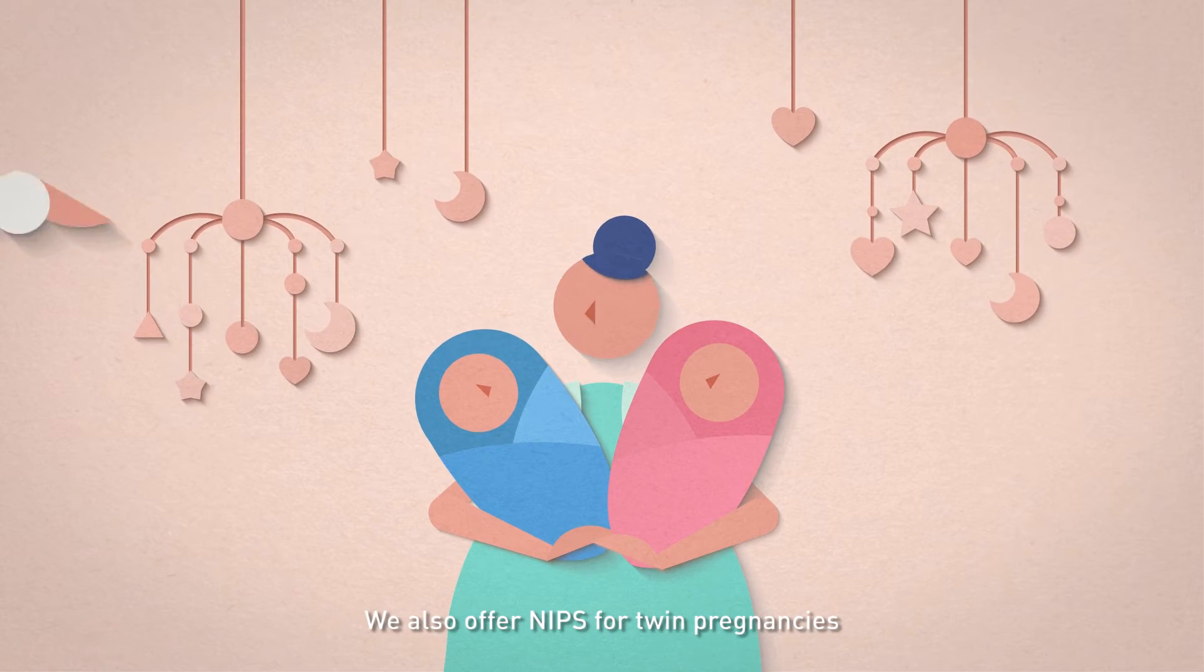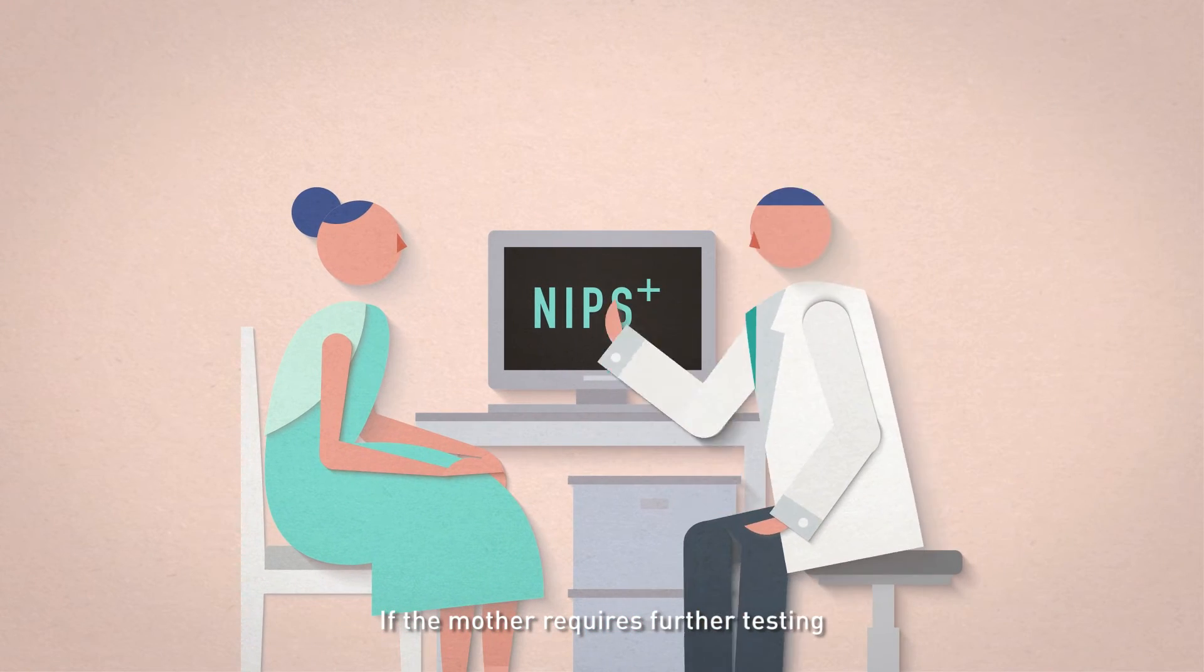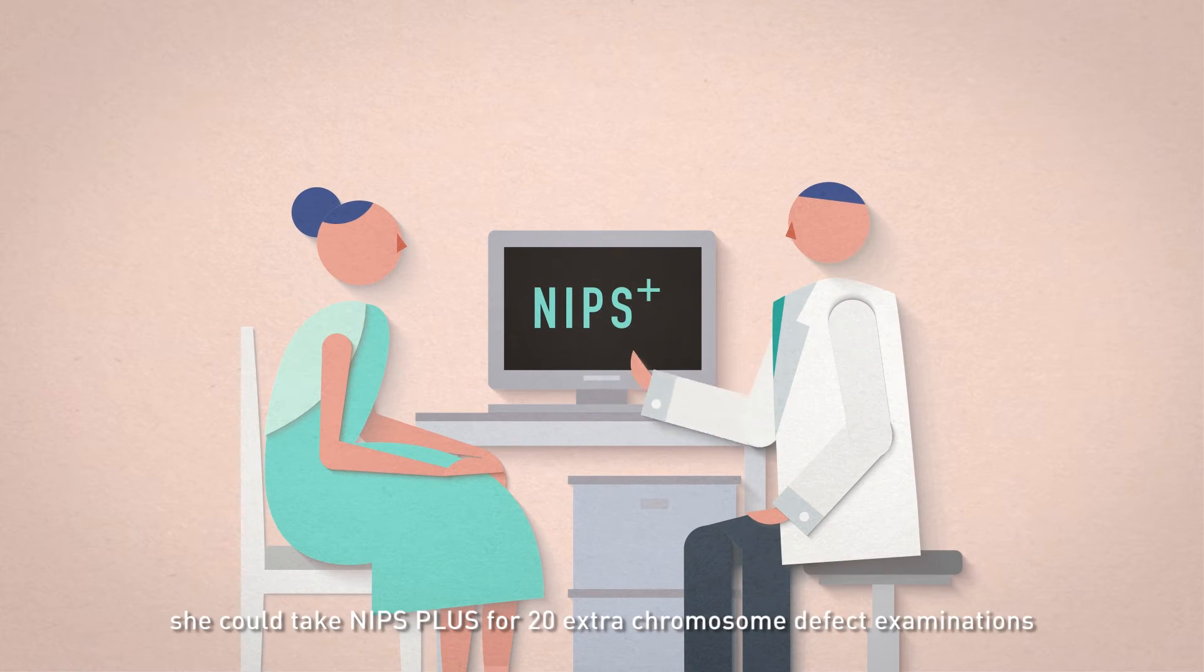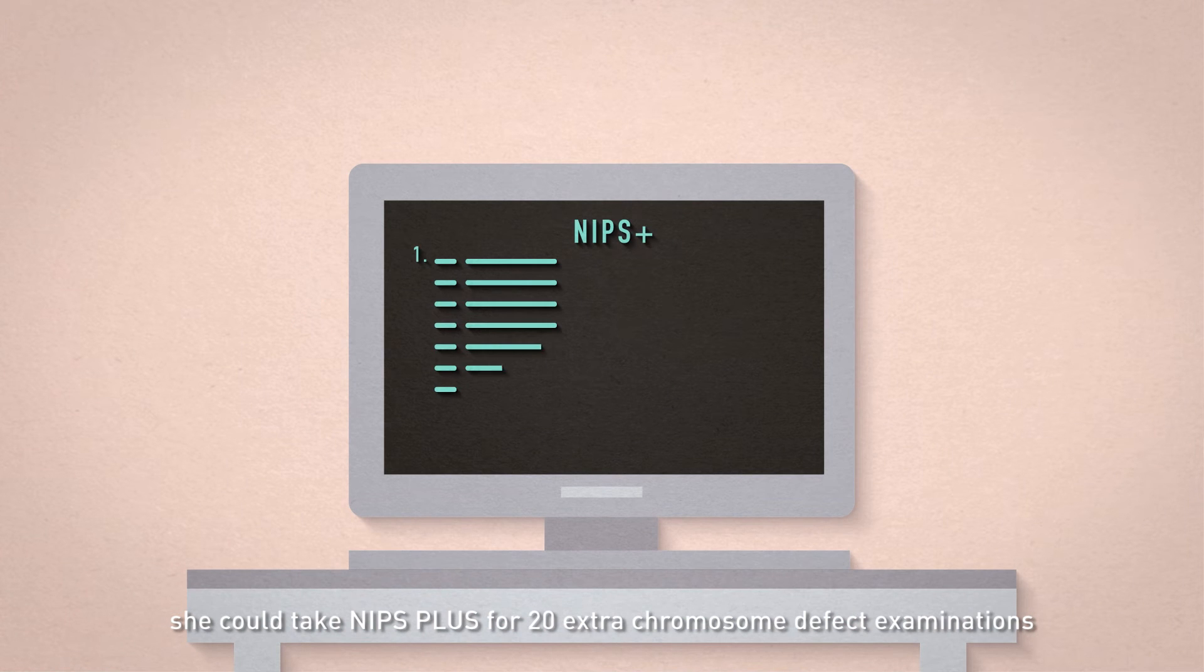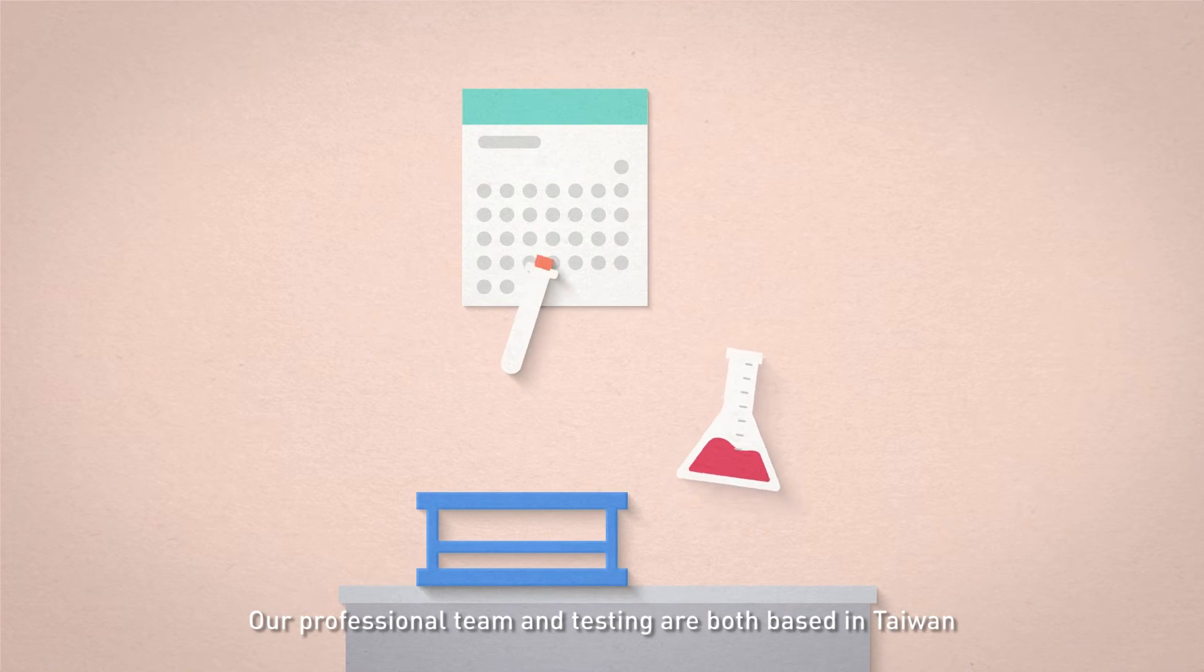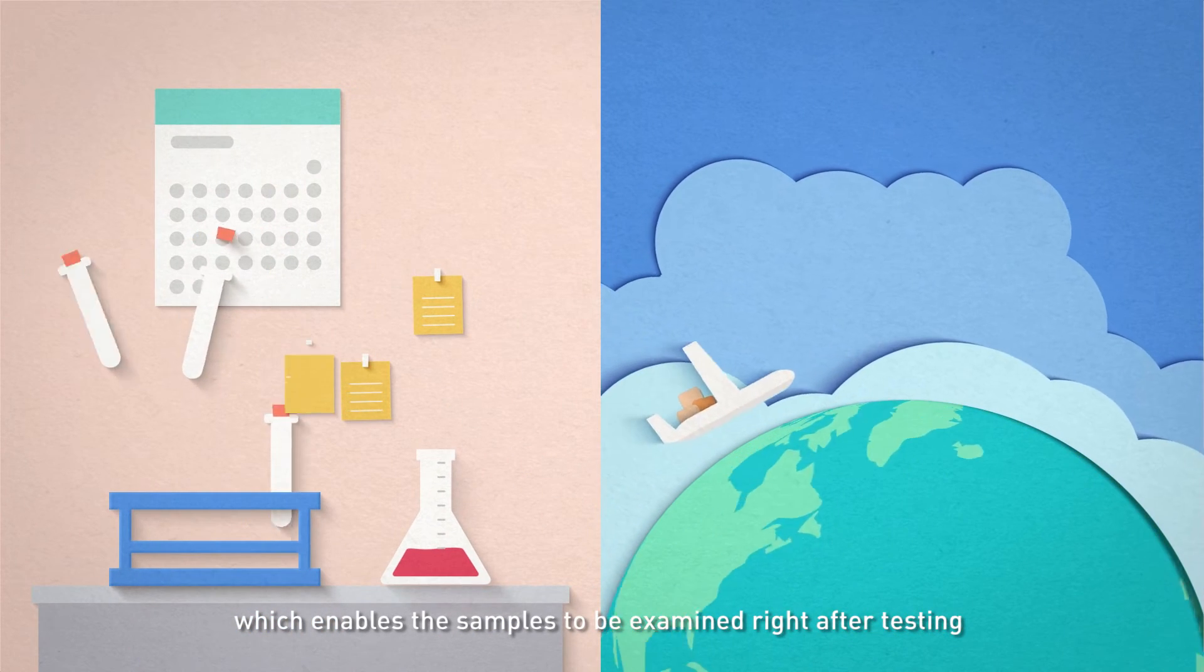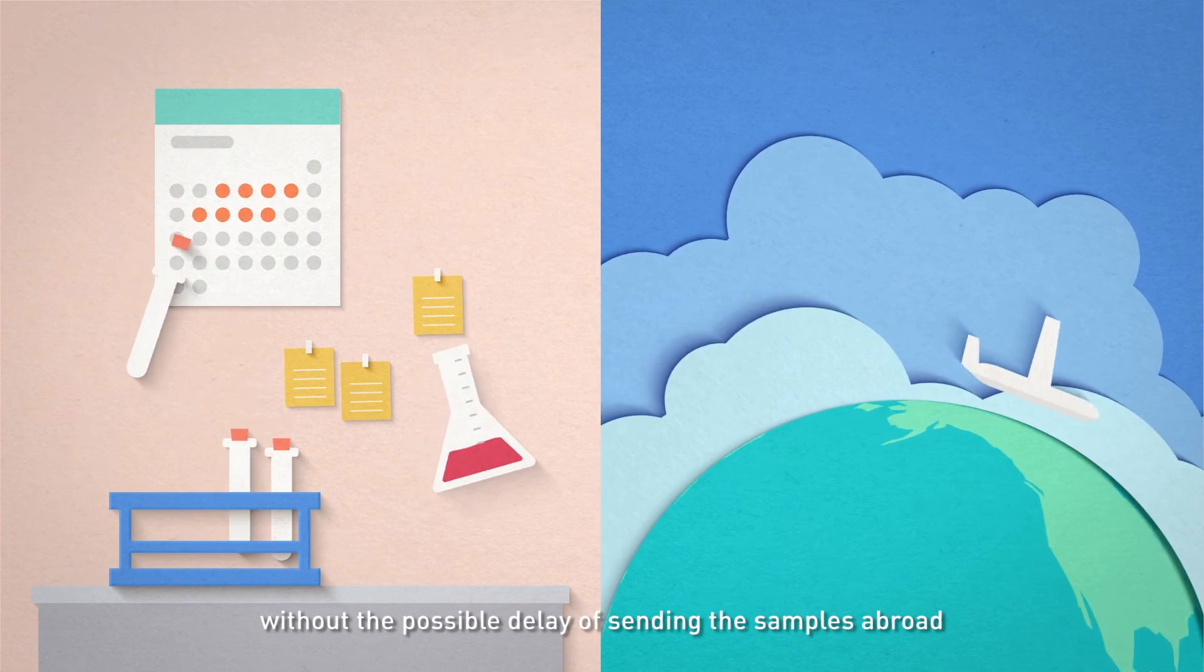We also offer NIPS for twin pregnancies. If the mother requires further testing, she could take NIPS Plus for 20 extra chromosome defect examinations. Our professional team and testing are both based in Taiwan, which enables the samples to be examined right after testing without the possible delay of sending the samples abroad.